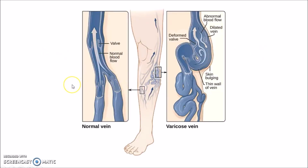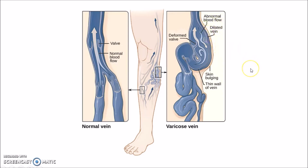This picture denotes the pathogenesis of varicose veins. In a normal vein the valve will be functioning normally and there will be normal blood flow, whereas in case of varicose veins the valve will be deformed and it will lead to dilated vein and various other complications.